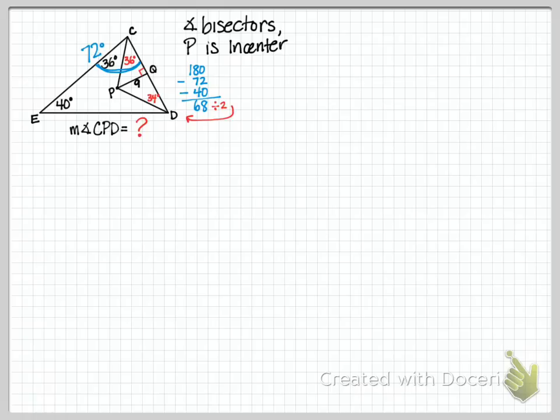And if we divide that by 2, we get that little angle in there, that angle PDQ is 34. Now look at the triangle CPD and notice that in that triangle, we're just missing the one angle, so we take 180 and subtract out the 36 and the 34, we get 110, and that's the angle that's missing.